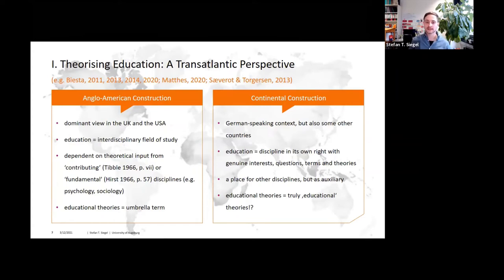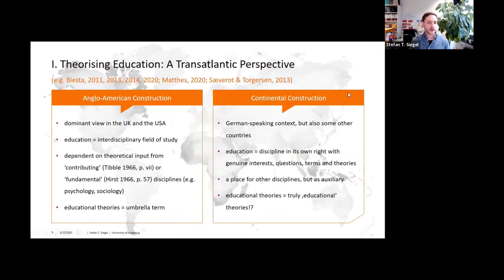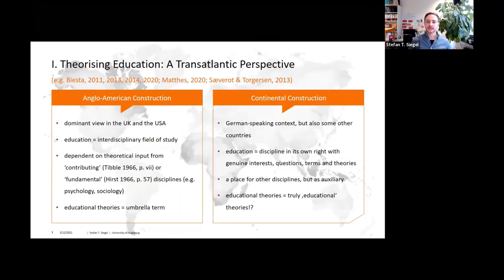When educational science is understood as a relatively autonomous discipline, it should be characterized by a distinctive interest, distinctive questions, and truly or genuine theories. In sum, this transatlantic perspective shows us that there are different traditions of theorizing education that manifest themselves in different socio-historic constructions of the academic study of education. I briefly characterized these ideal types and pointed to significant differences. If you're interested in a far more detailed comparison, I can highly recommend Goethe's article from 2011.